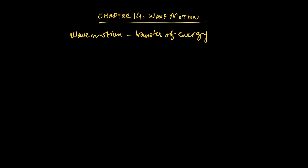For the purposes of this chapter, we're studying what we call progressive waves. As the name implies, they're progressing — the wave itself is moving from one point to another. Like if you see waves on the sea, that wave is not standing still; it is actually moving from one point to another.